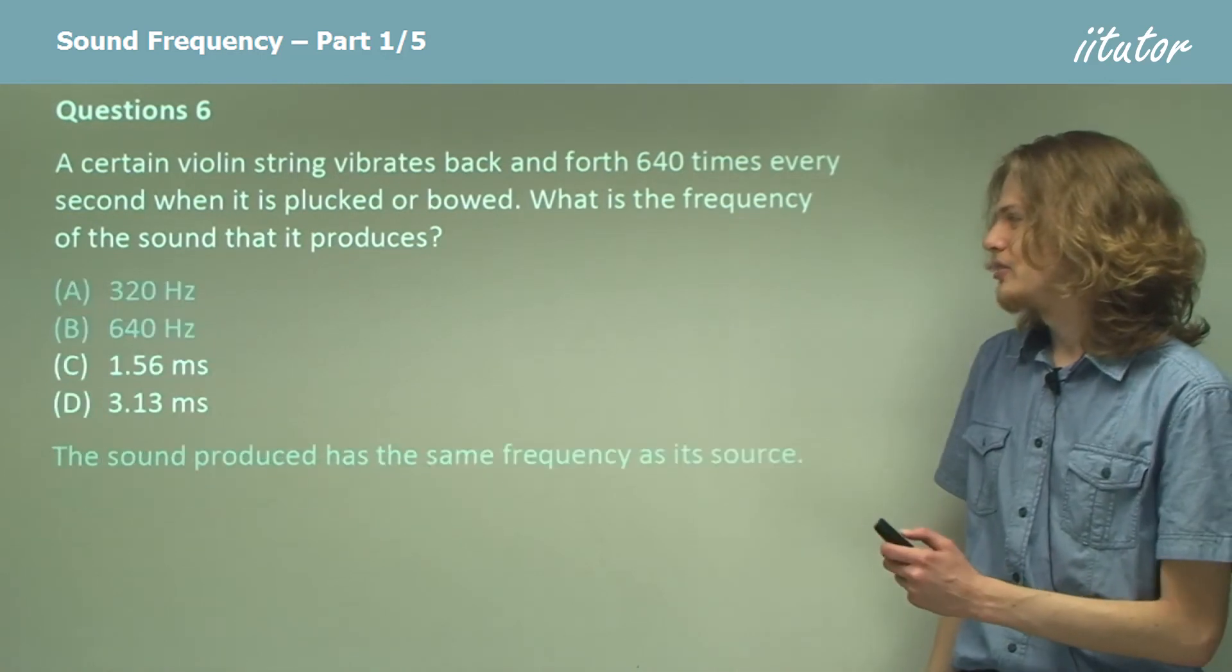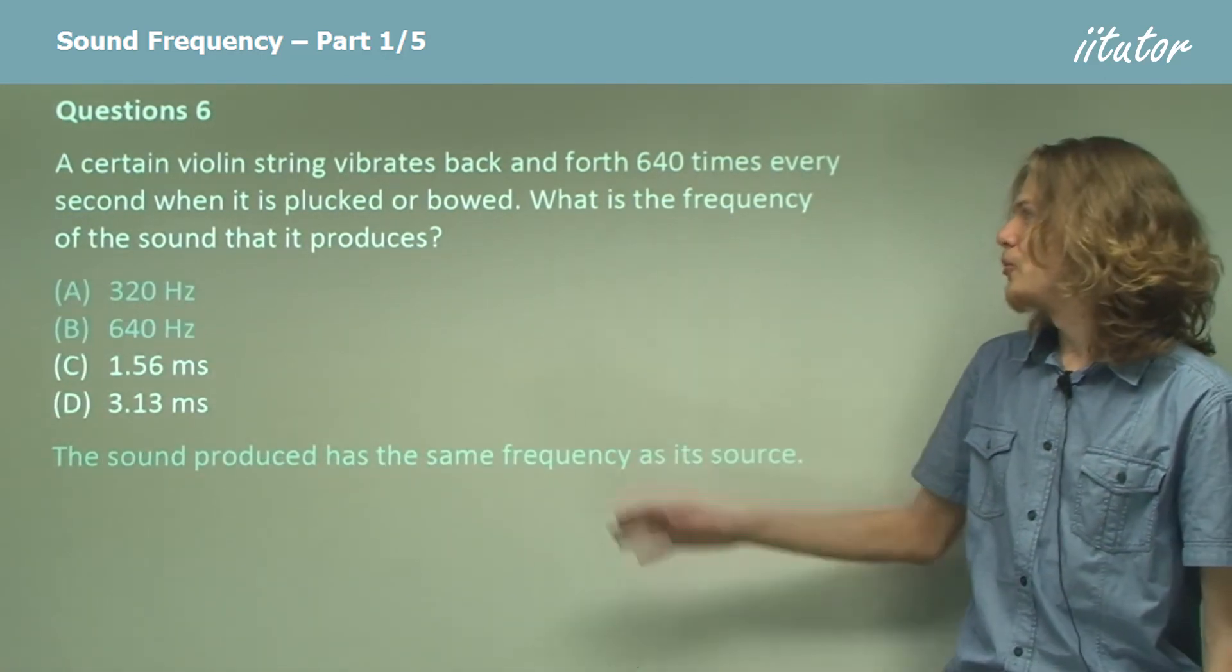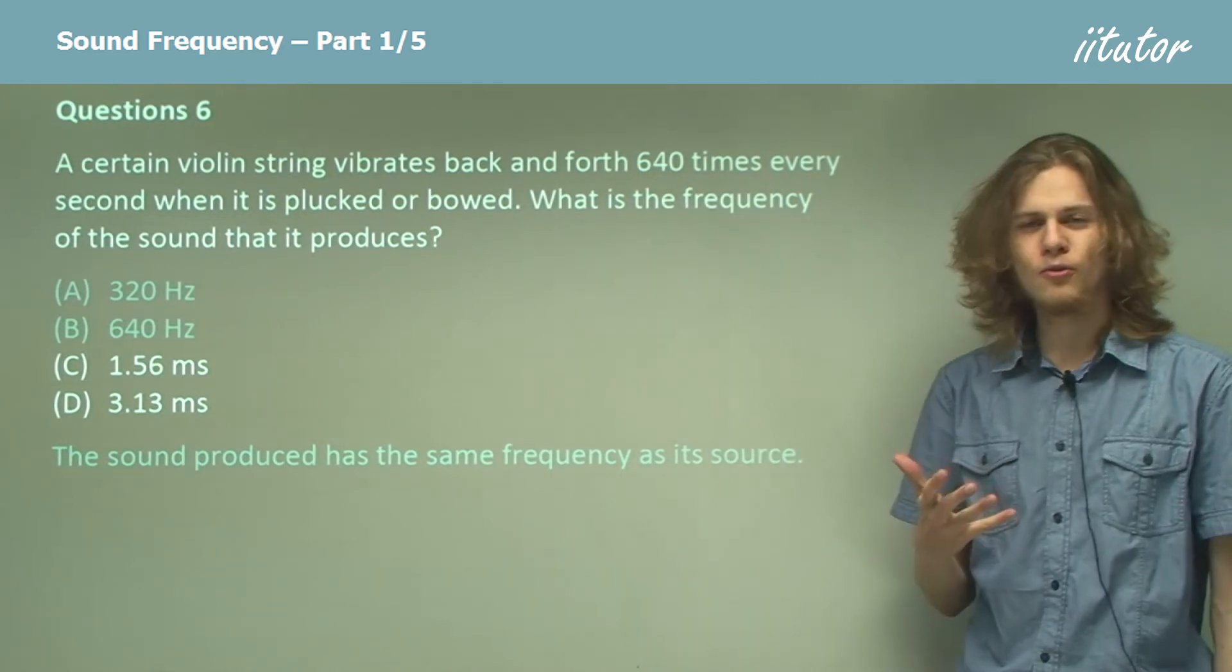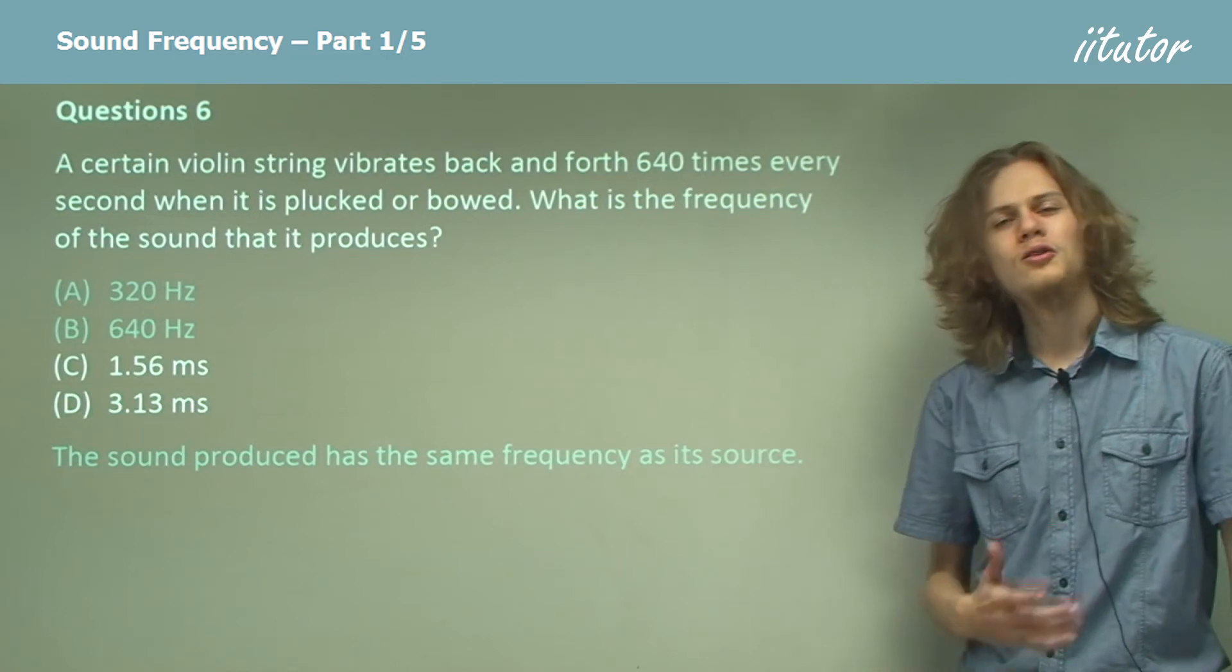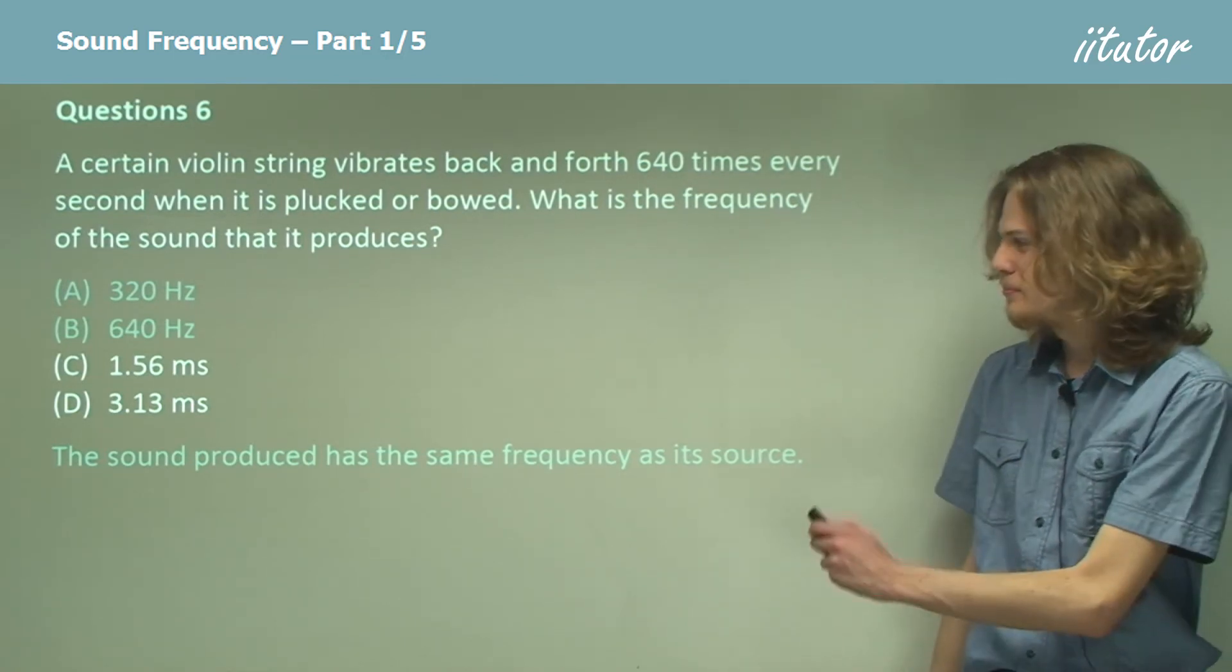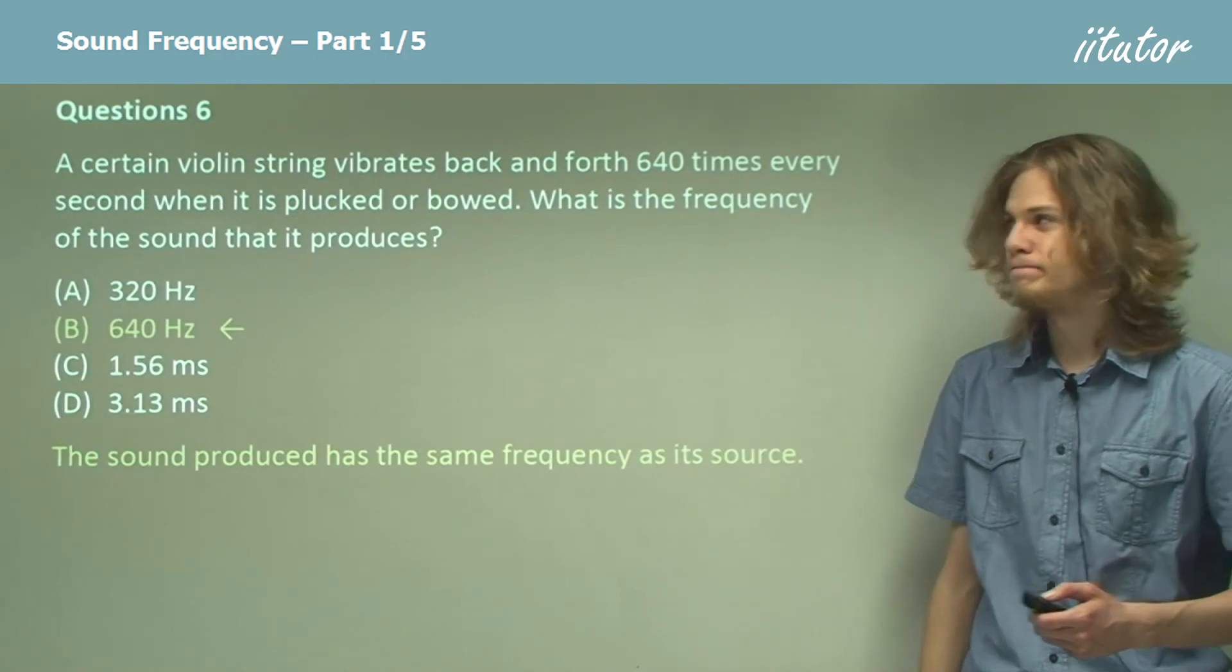So our only correct answer has to be something in hertz, and as we saw, if the violin string is vibrating 640 times a second, that is 640 hertz, then it will create a sound wave with 640 hertz as its frequency. 640 hertz.